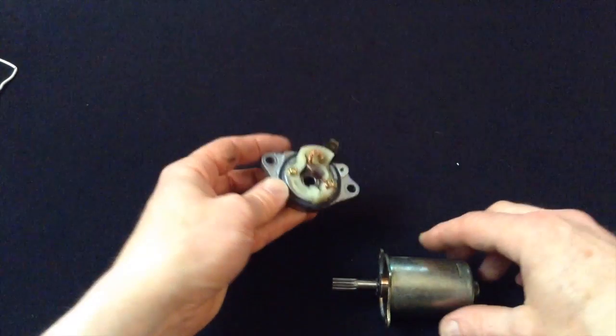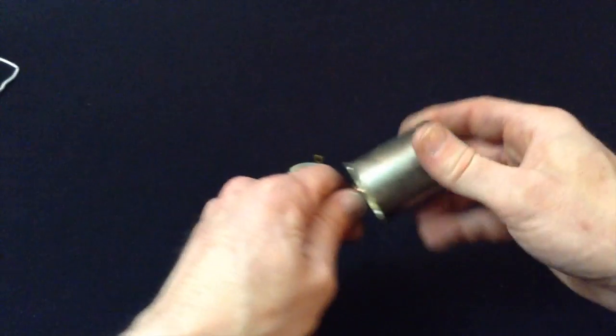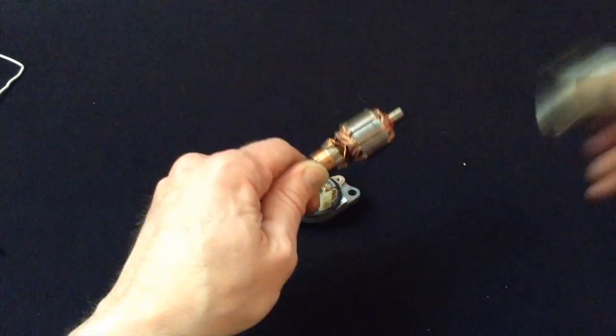So, as the commutator turns, it's constantly got one direction of current going through it, which keeps the motor moving.